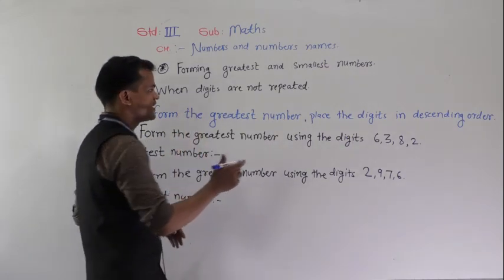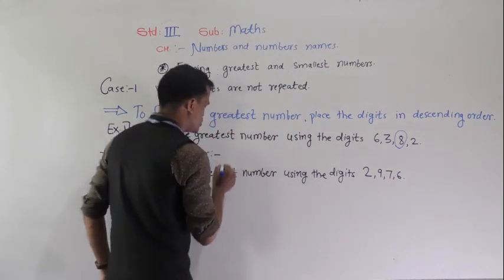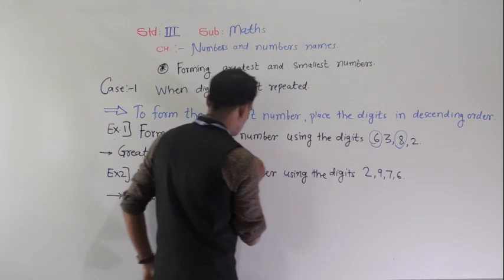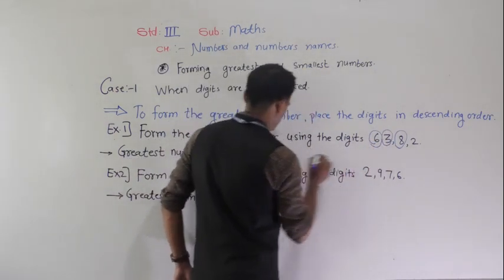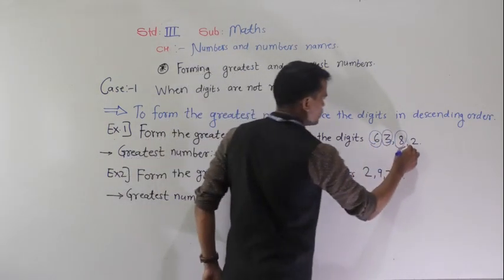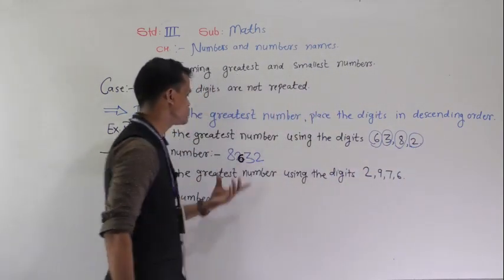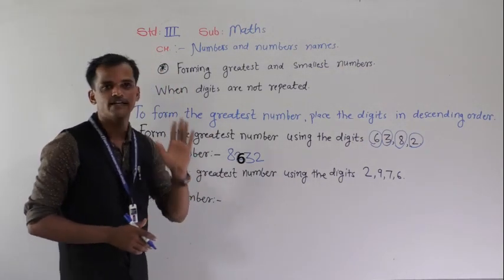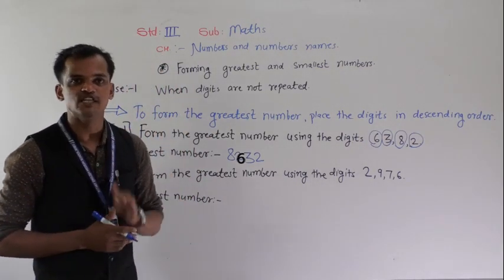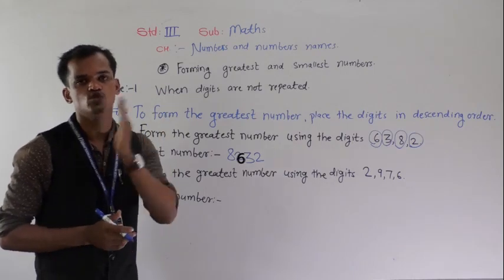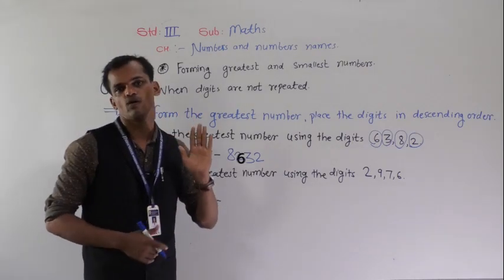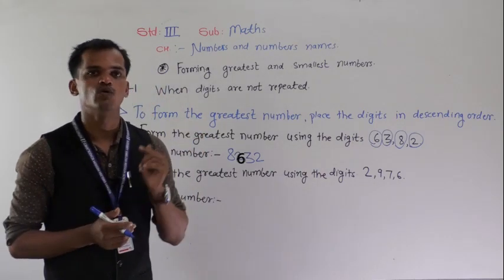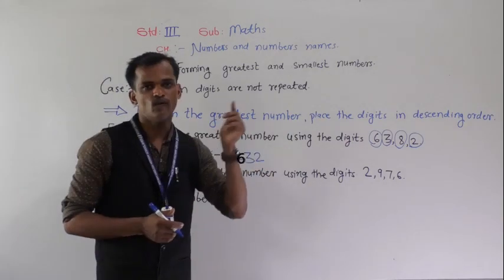So place the greatest digit at the first position. Write 8 at the first position, then 6 at the second position, then 3 at the third position and 2 at the fourth position. This is our greatest number formed. To form the greatest number, place the digits into descending order — big to small order. Each digit must be used only once.